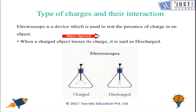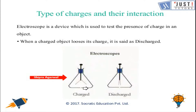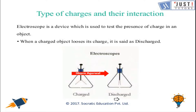To measure charges we have an electroscope, which shows the presence of charge in an object. When a metal conductor is charged, electric charge can be transmitted from one charged object to another, as tested by the electroscope. When a charged object loses its charge, it is shown as discharged. This process is used in earthing, where we transfer charge from a charged object to the earth — for example, in buildings, to protect against lightning storms.